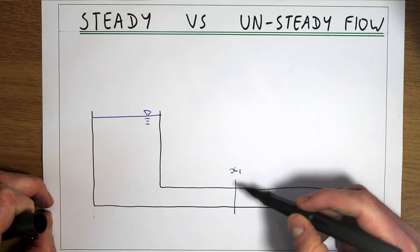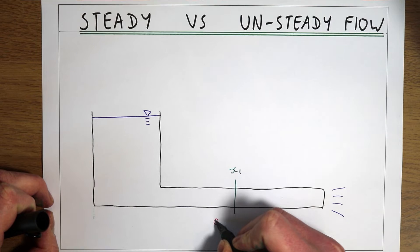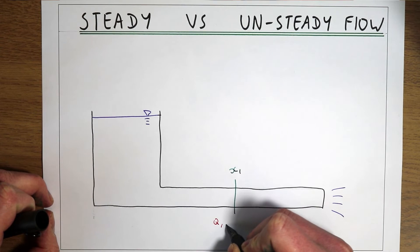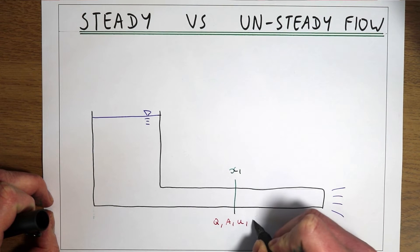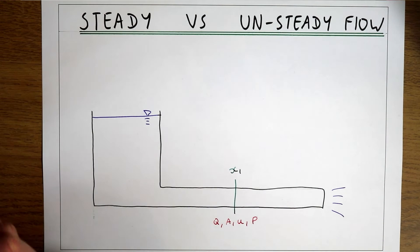At this particular location in space, the flow is going to have a discharge, it's going to have an area, it's going to have a velocity, and it's going to have a pressure.